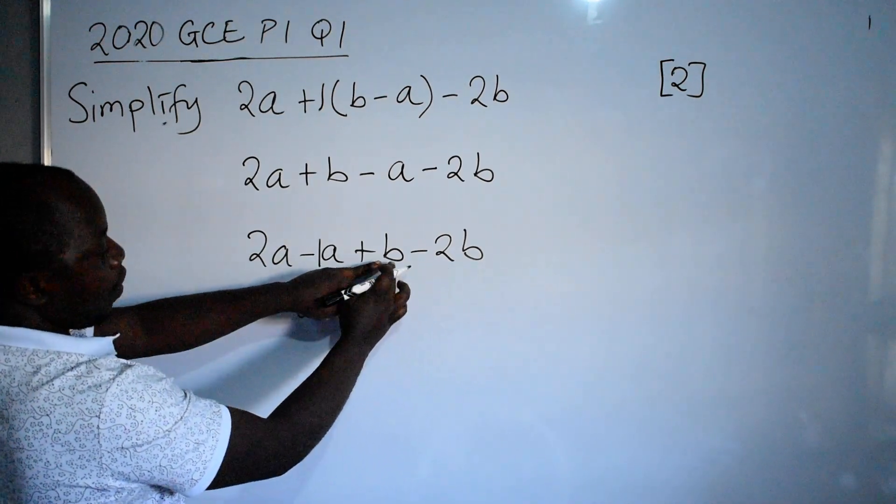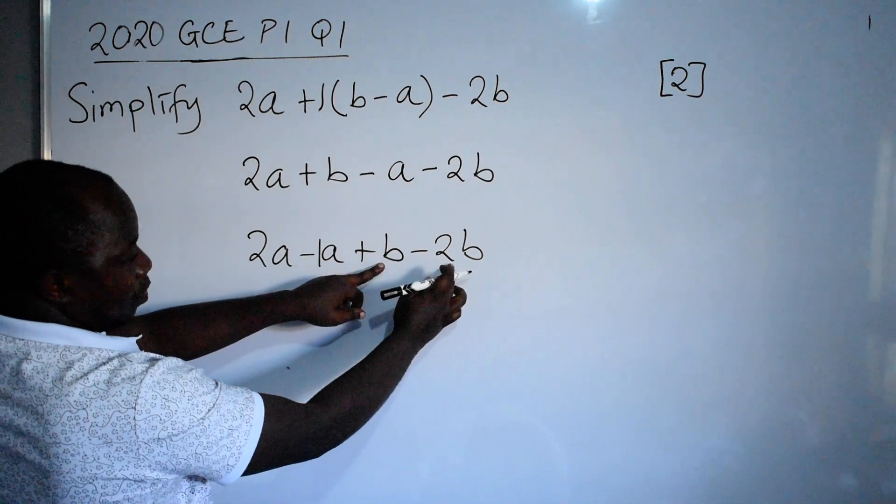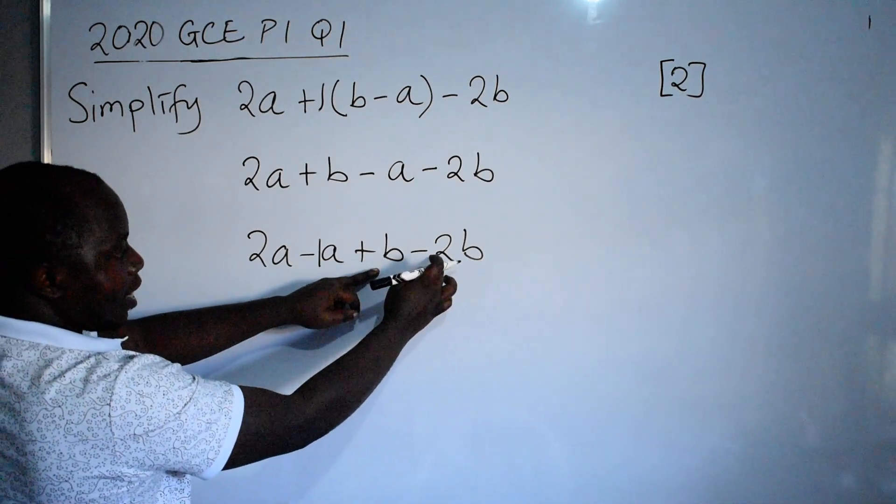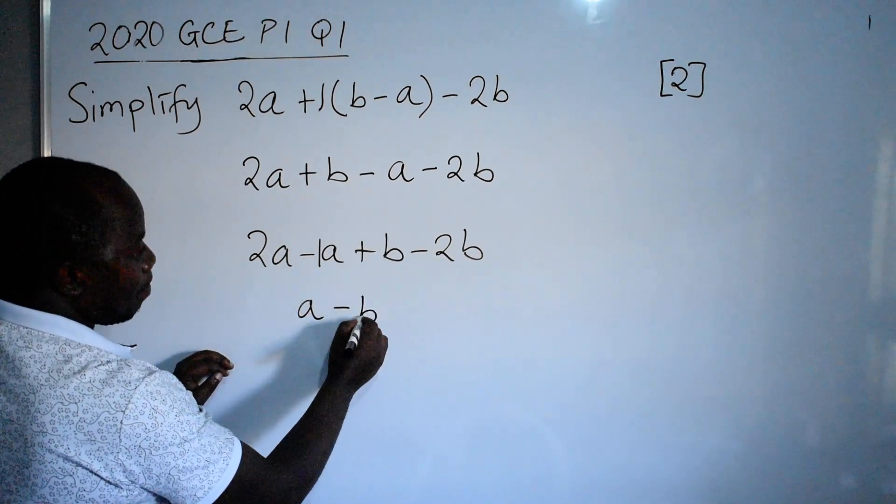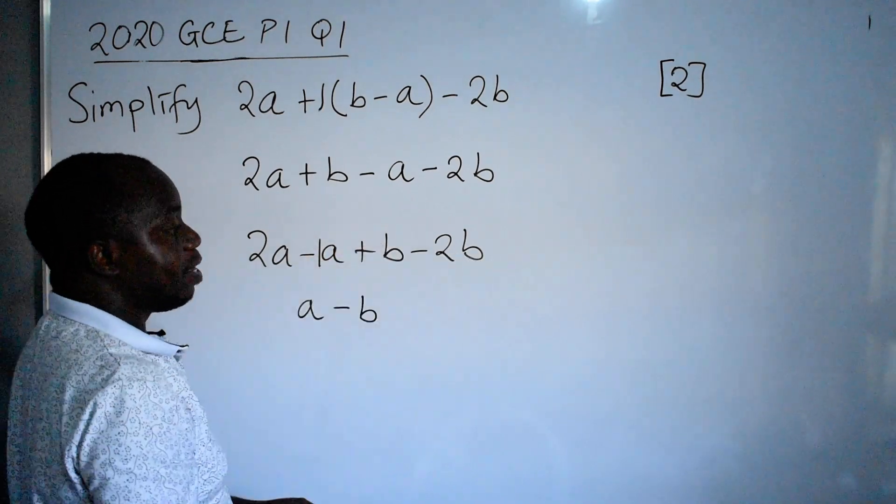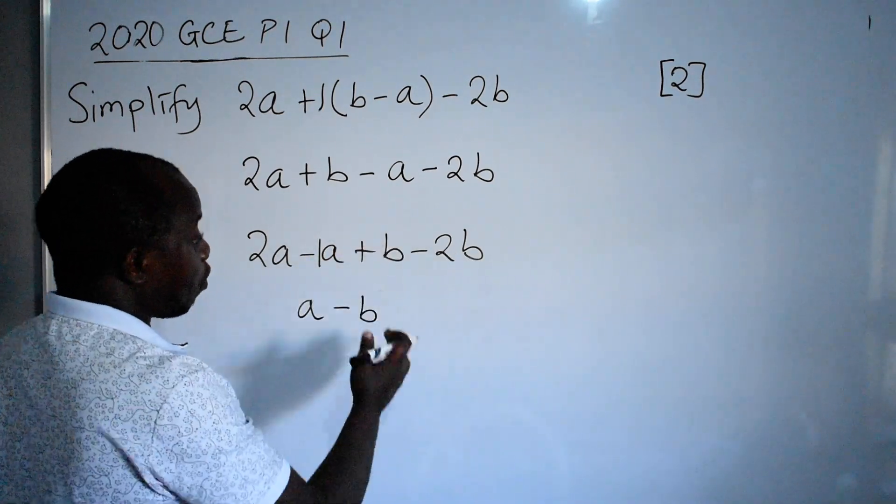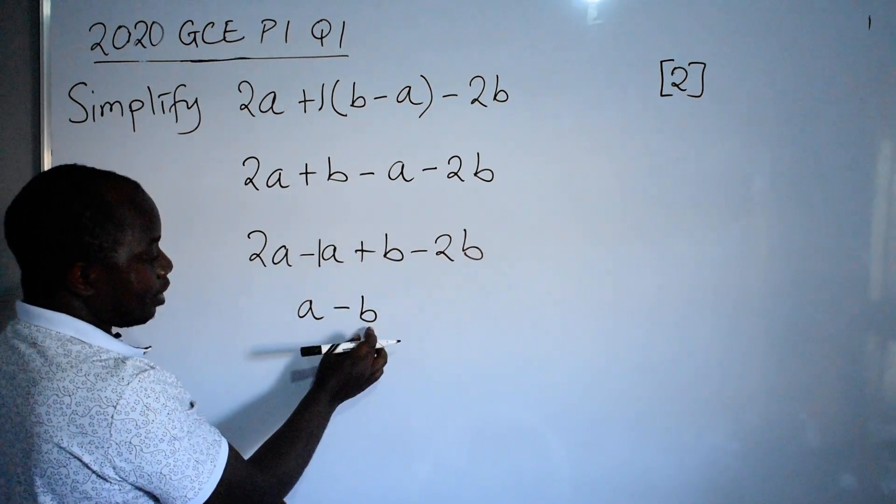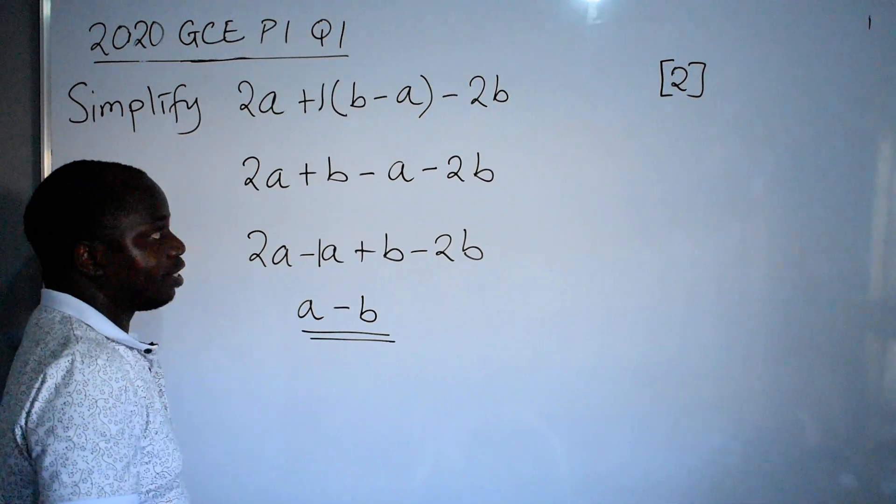Then, on the other side here, we have b minus 2b. So b minus 2b, that is minus b. Because here, there is a 1 here. So that is the same as 1 minus 2. That is negative 1. 1 minus 2, that is negative 1. So that negative 1b, you just say minus b. So this is your final answer.